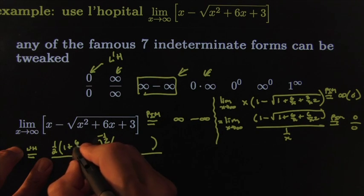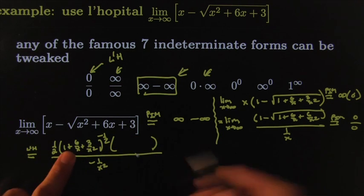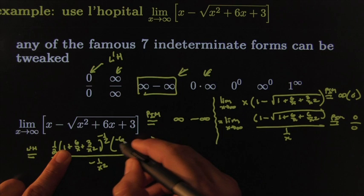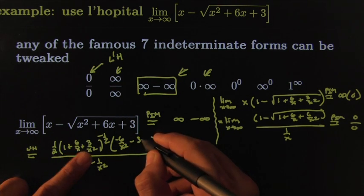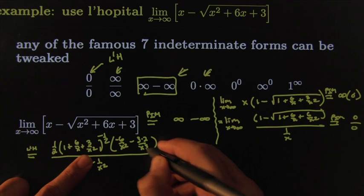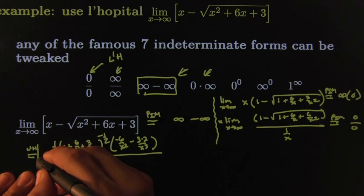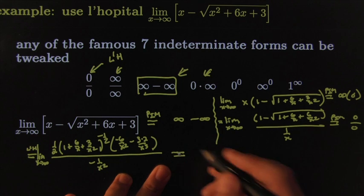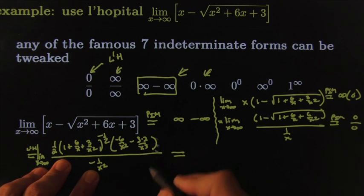The stuff inside is 1 + 6/x + 3/x². Taking its derivative gives −6/x² minus 6/x³ (since the derivative of 3/x² is −6/x³). I still have a limit as x goes towards infinity. Now I'll clean it up by multiplying through by x².